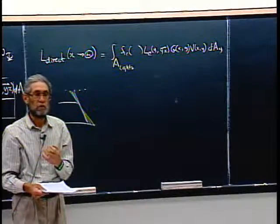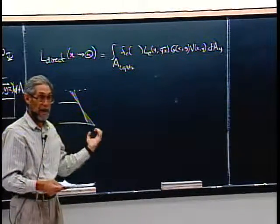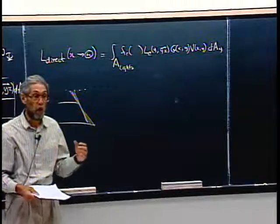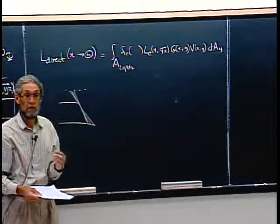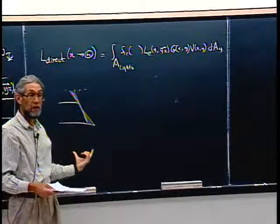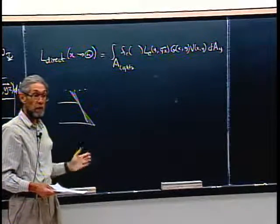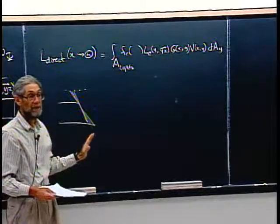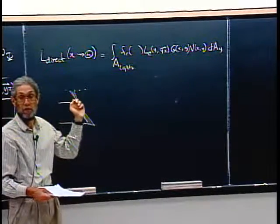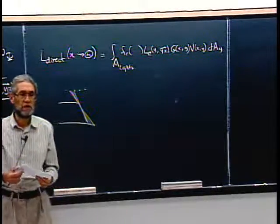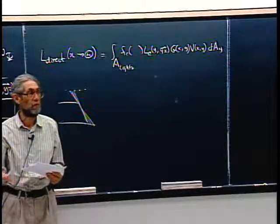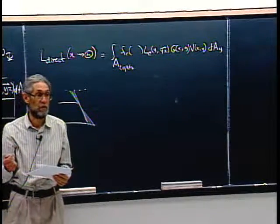One solution is for every pixel to take a different collection of dots on the light source — sample the light source in a random way with different samples for every pixel. It still won't be exactly accurate since you're estimating the analytic integral by sampling, but you turn the banding error into what looks like noise. If you only have 20 spots on the light source there are 20 levels, but instead of bands they get broken up by the random placement of dots. That's the philosophy of our Monte Carlo sampling.